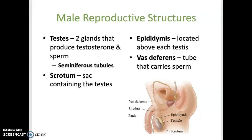The scrotum is the external sac that contains both testes, and the epididymis is actually located on top of each of the testes. It's a storage area where sperm mature and develop.